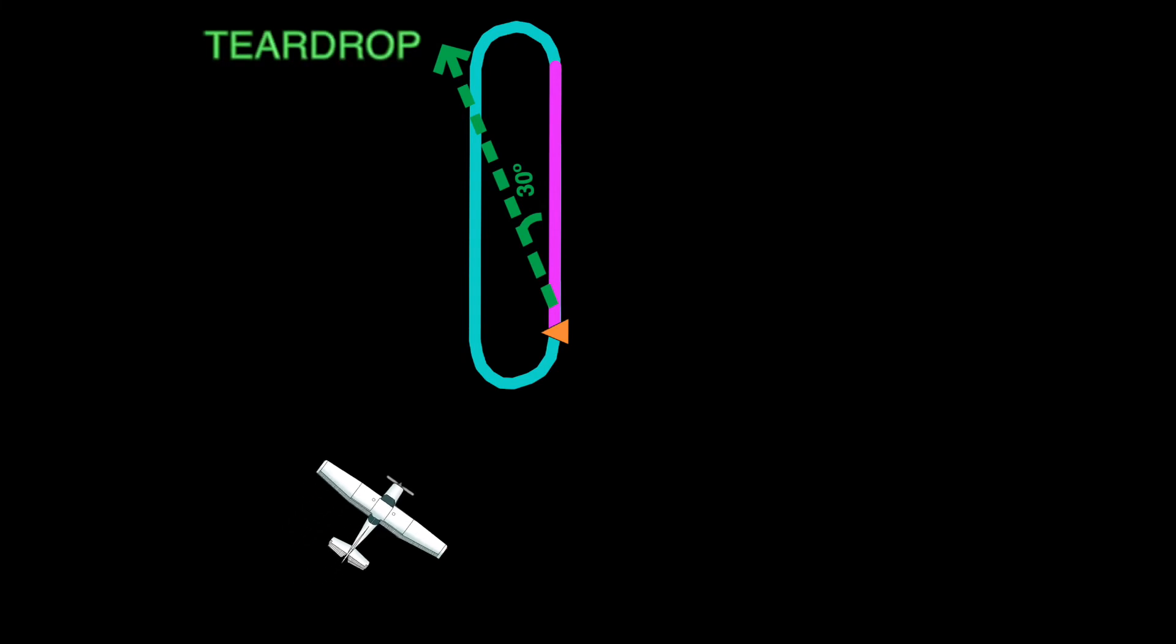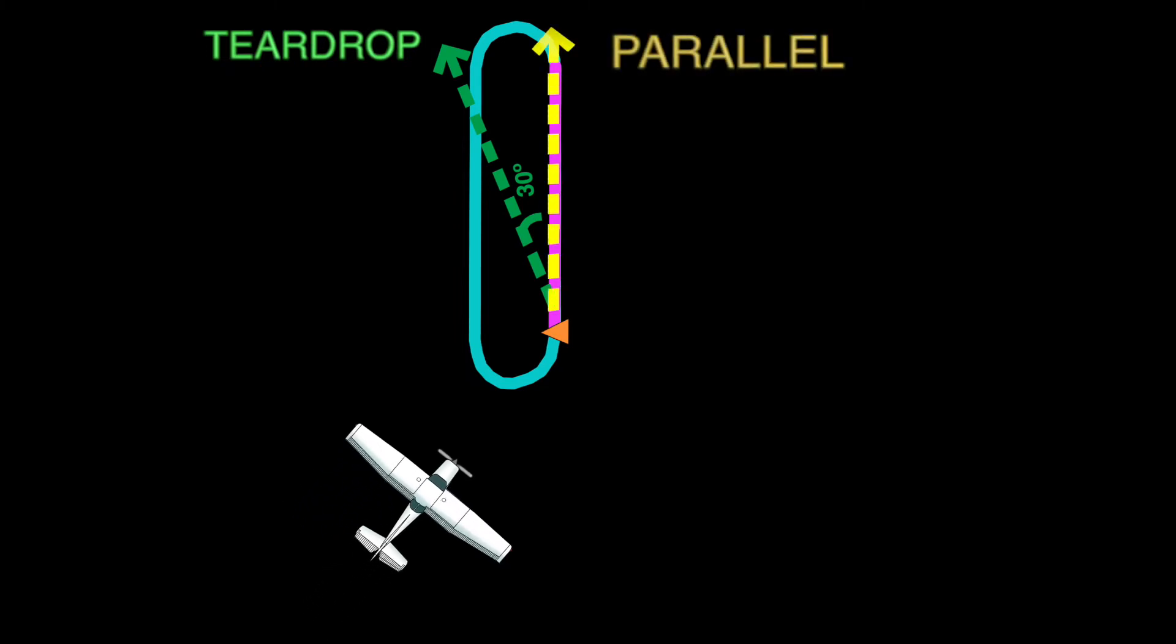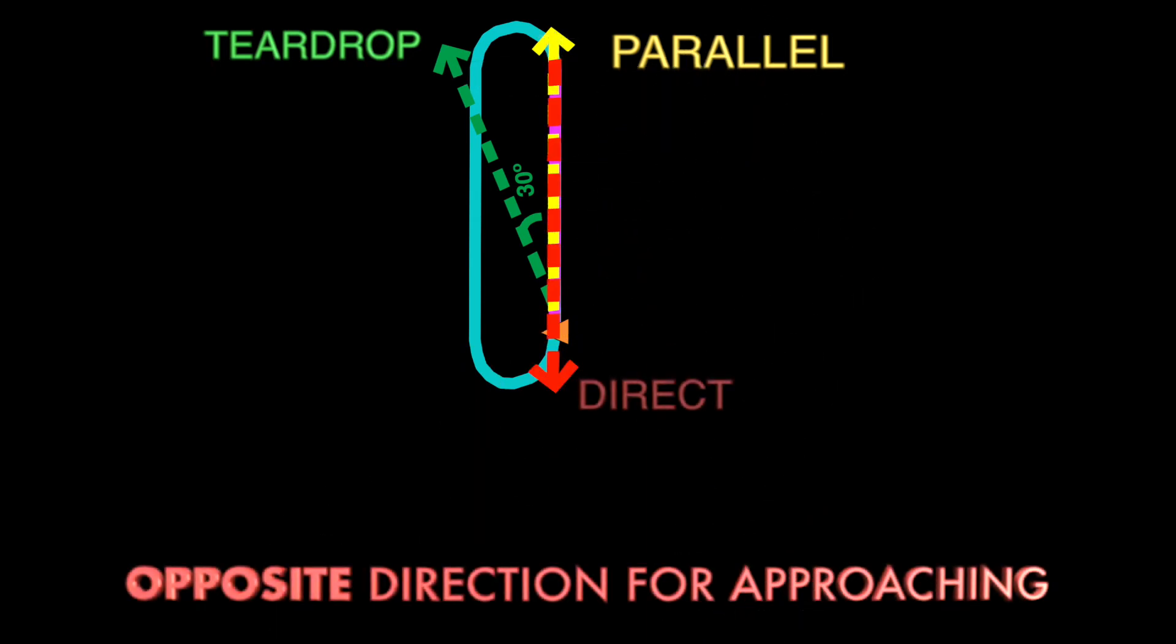The teardrop entry would require the aircraft to turn this much. The parallel entry would have the aircraft turn that much. And to do the direct entry, it simply wouldn't work here as the aircraft would have to be approaching from the opposite direction from where it's at now.